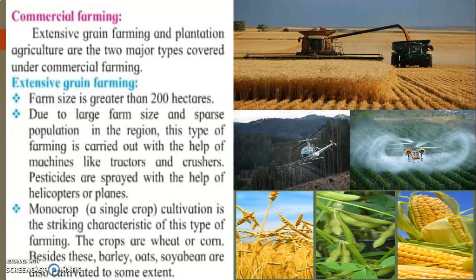Extensive grain farming is carried out in regions where population is less and availability of land is more. Machines like tractors are used. For such a huge area, spreading pesticides, insecticides, and fertilizers by hand is very difficult, so specially designed aeroplanes and helicopters are used to spray water, pesticides, and fertilizers to protect the plants from pests and insects. In extensive grain farming, only one type of crop — a monocrop — is grown, as you can see in the pictures of wheat, barley, and soya beans.